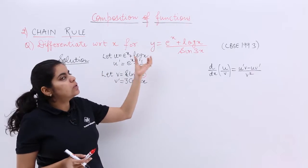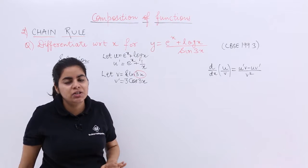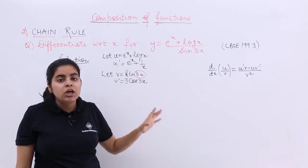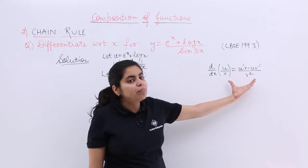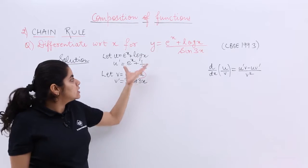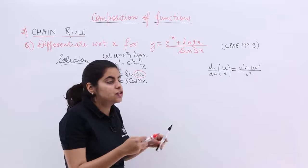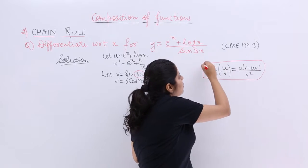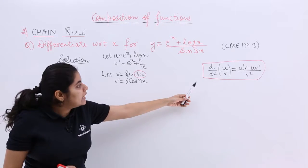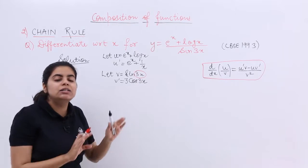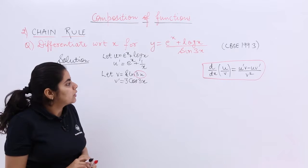Some of you may wonder: why are we assuming u equal to something and v equal to something — won't that make it substitution rather than chain rule? No. This is not substitution. The quotient rule formula uses u and v, so we label the numerator as u and denominator as v to clearly show the examiner which is which.